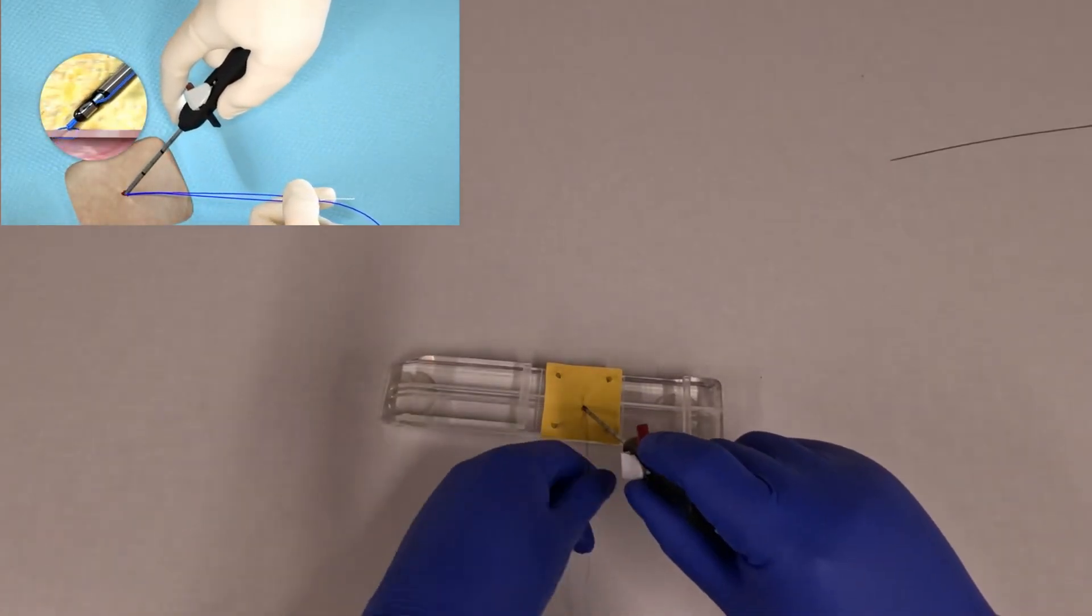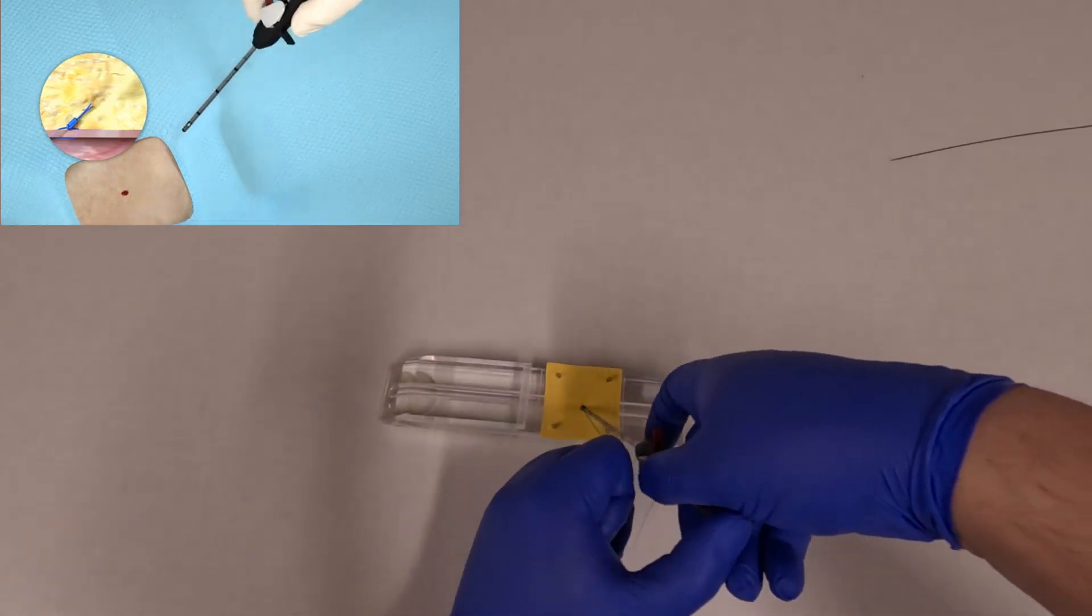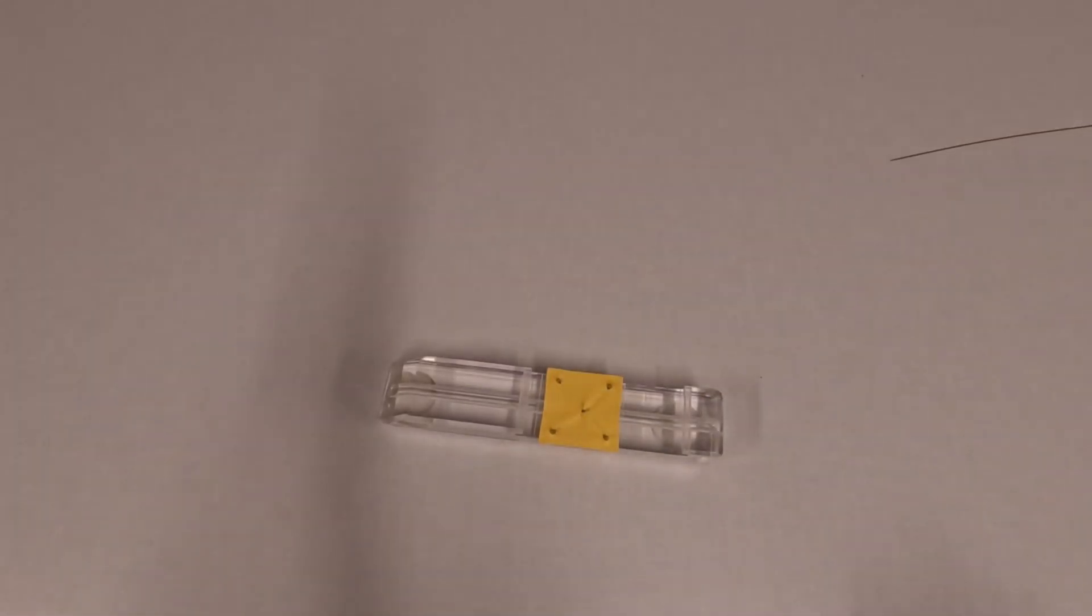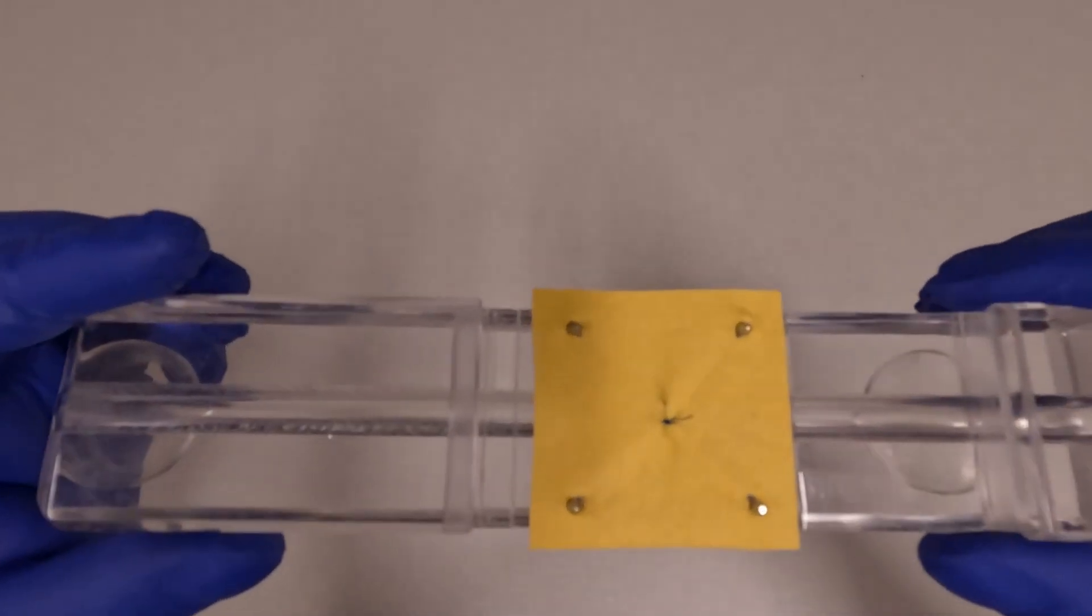And then walk the suture cutter down, and you'll feel resistance when you approach the arteriotomy. Again you pull on the suture, and then pull the red lever to cut. This deploys the Perclose suture, and we're complete.